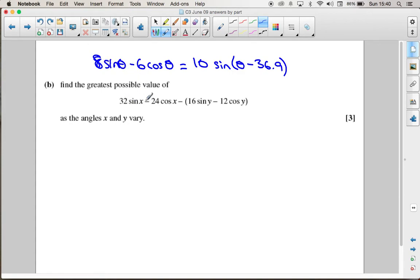But it's 4 times bigger and we've got an x instead of theta. So we can rewrite 36sinx - 24cosx as 40sin(x - 36.9). And we can similarly write 16siny - 12cosy as 20sin(y - 36.9).